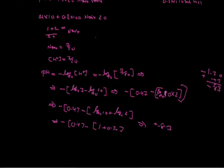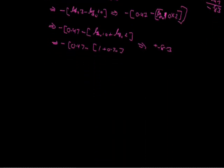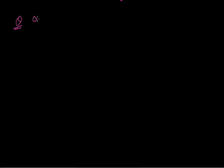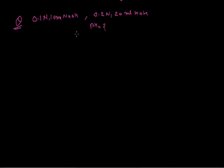Next example: suppose the examiner gives you all bases. Find out the pH of the solution which contains 0.1 normal 10 ml NaOH and 0.2 normal 20 ml KOH. Both are bases, so we use the formula N1V1 plus N2V2 equals Nmix times Vmix.